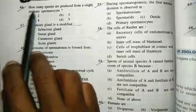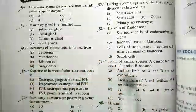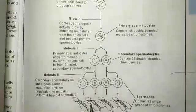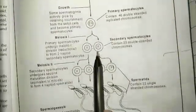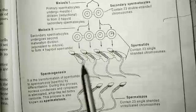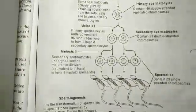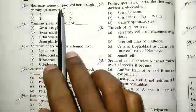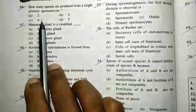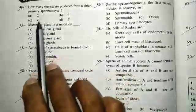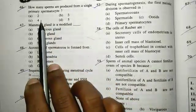Question 46: how many sperms are produced from a single primary spermatocyte? From a single primary spermatocyte, four sperms are produced. Looking at the diagram, the primary spermatocyte undergoes division to ultimately produce four sperms. So the correct answer is four.